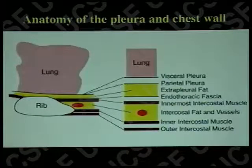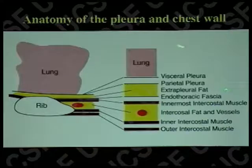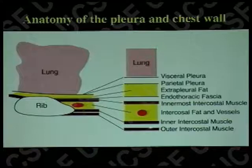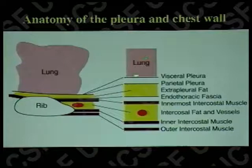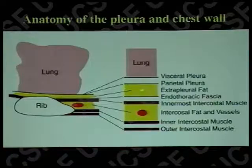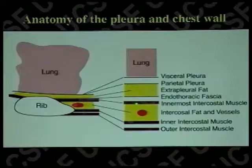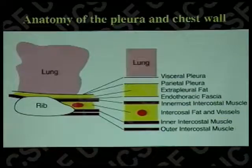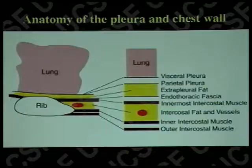Starting with anatomy, this is a diagrammatic representation of the interface between lung and chest wall. Starting on the inner side we have lung, then visceral pleura, pleural space, parietal pleura, a variable layer of extra pleural fat, endothoracic fascia, then the innermost intercostal muscle, intercostal fat containing vessels and nerves, and then the inner and outer intercostal muscles. This is a representation of what it looks like on a CT scan.